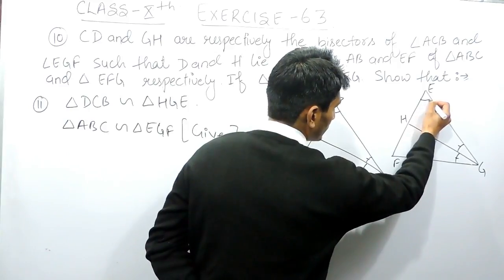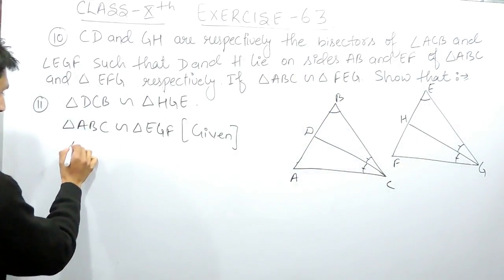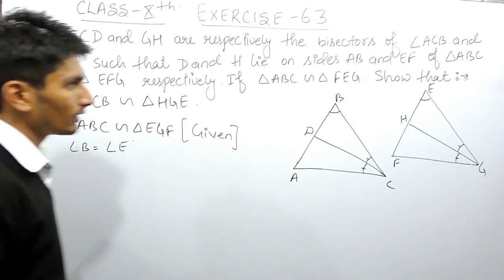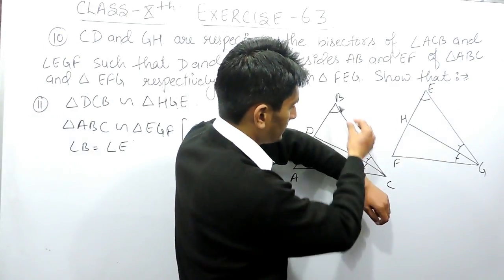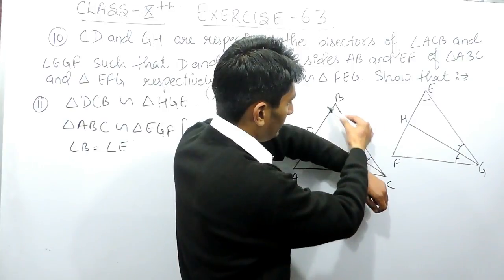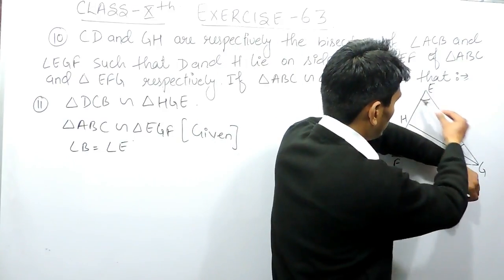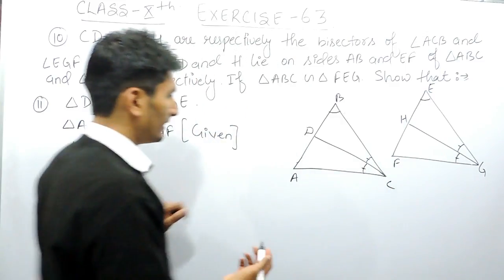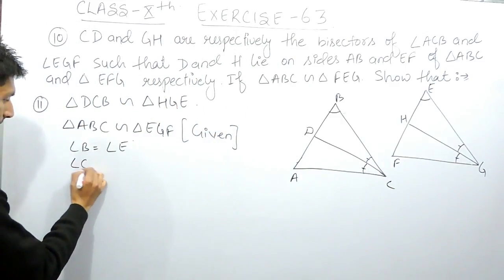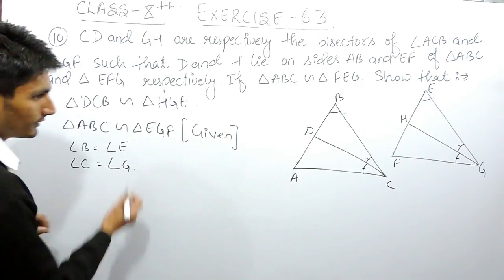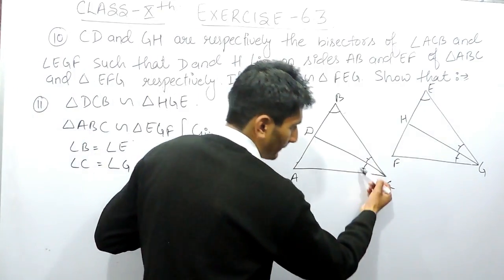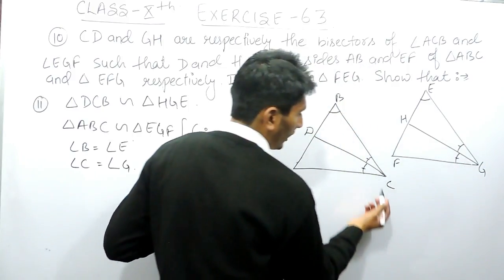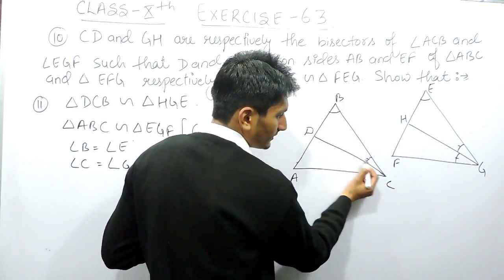Since triangles ABC and EGF are similar, angle B must be equal to angle E. Now in these two triangles, this angle is equal to this angle. Similarly, angle C must be equal to angle G, and this complete angle must be equal to this complete angle.